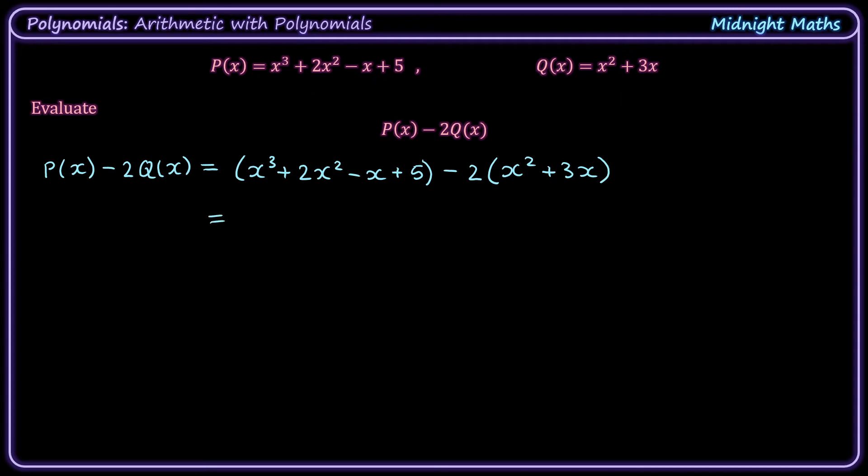All right, and now as you can see, this 2 will be expanding into the brackets, so that's why we wrote the brackets there, and actually the negative 2, not just the 2, is going to expand in. So let's write it out just as it is.